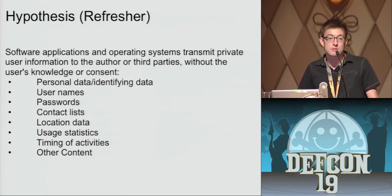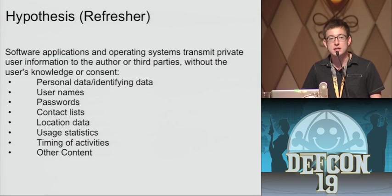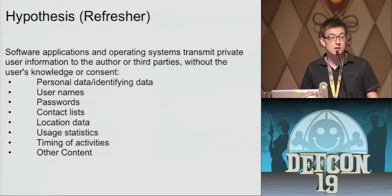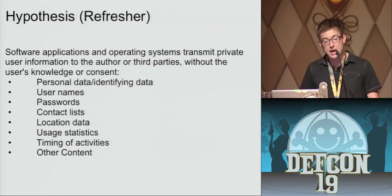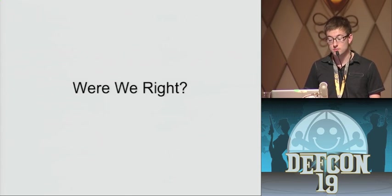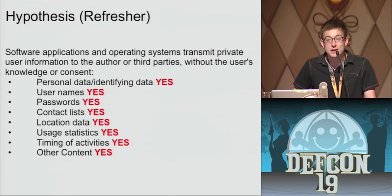So it's definitely doable — these companies can make your information private, they can make it so I can't intercept it on the wire. But the problem is, they don't. They view it as not important data — or maybe not necessarily unimportant, but not sensitive. They don't take the time to protect it, they don't want to invest in servers to encrypt it over the wire. And even if they do, it's still exploitable — Facebook application, you can use SSL strip, username and password, done. Applications are sharing: usernames, passwords, contact lists, location data, usage statistics, timing of activities, and other content. Were we right? Yes — we were right on all of those counts.